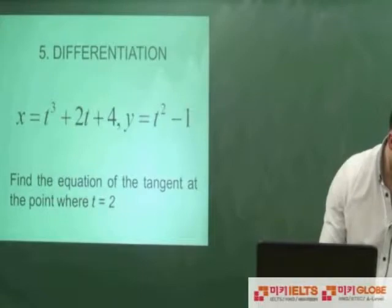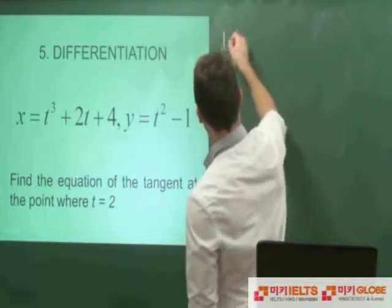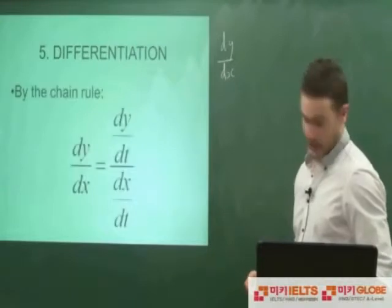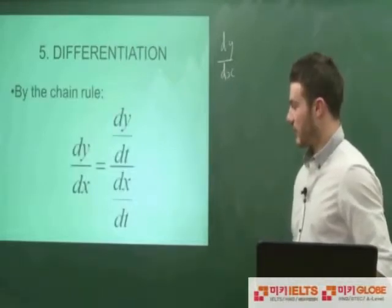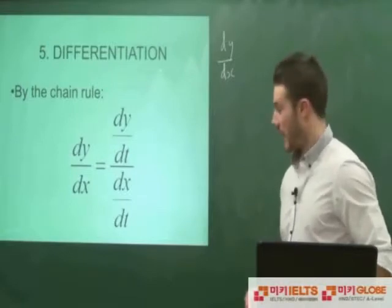We just use our chain rule. So, dy by dx, as I just showed you, is equal to dy by dt, so the differential of y with respect to t, divided by the differential of x with respect to t.